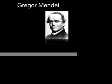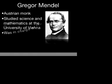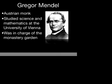Gregor Mendel was an Austrian monk who lived in the 19th century. After becoming a priest, Mendel studied both mathematics and science at the University of Vienna. Along with teaching, he was also in charge of the garden at his monastery. Mendel's work in his garden would later become the basis for modern genetics.